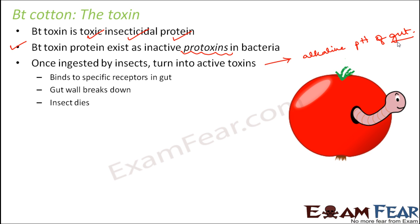This is how Bt toxin becomes toxic. Many people have this question: when bacteria produce Bt toxin, why is it not harmful to the bacteria? That is because it is present in an inactive form called protoxin. Similar to pro-insulin, pro-hormones, or pro-enzymes, a protoxin is a chemical compound that becomes toxic only after its chemical structure is altered in some way. When taken in by insects, it becomes activated due to the alkaline pH of the insect gut, breaks down the gut wall, the insect stops eating, and finally the insect dies.